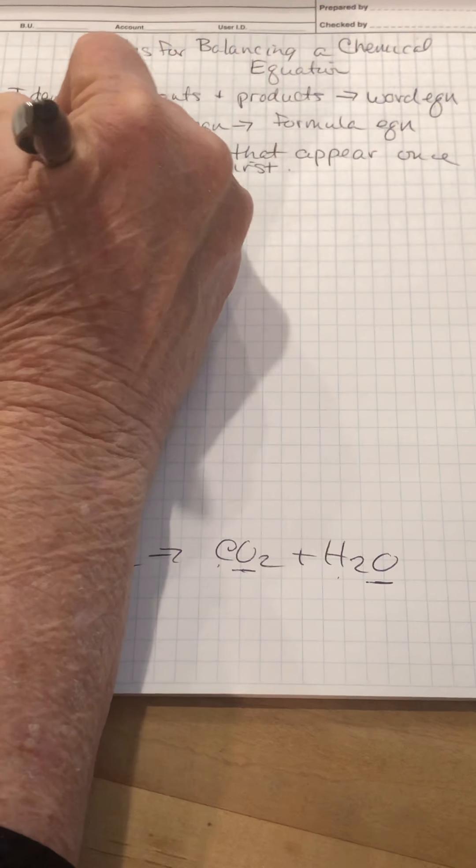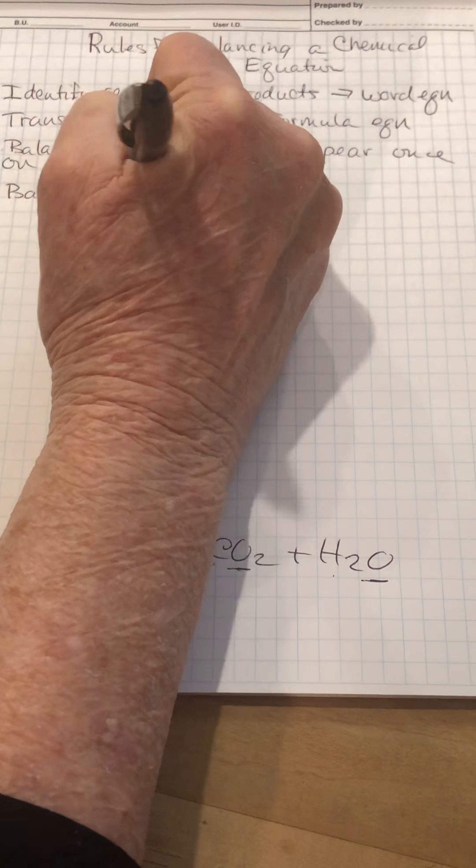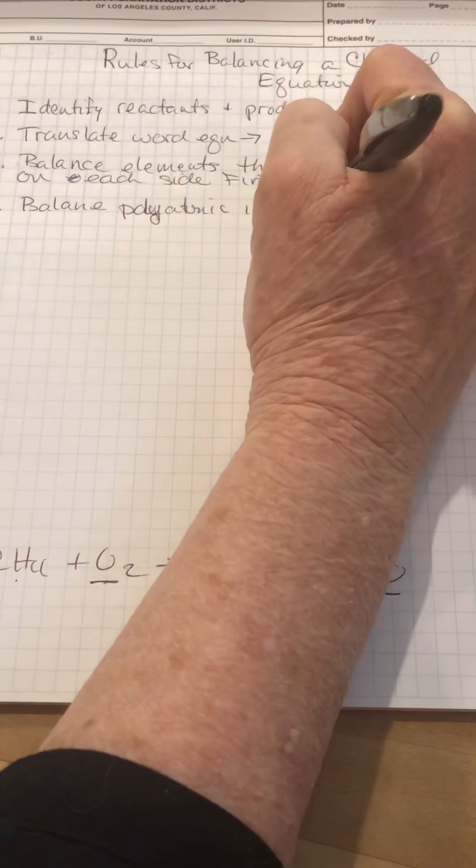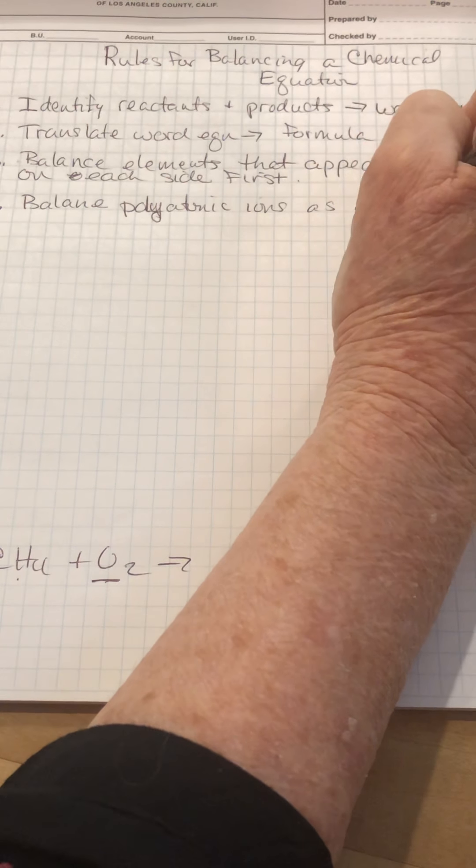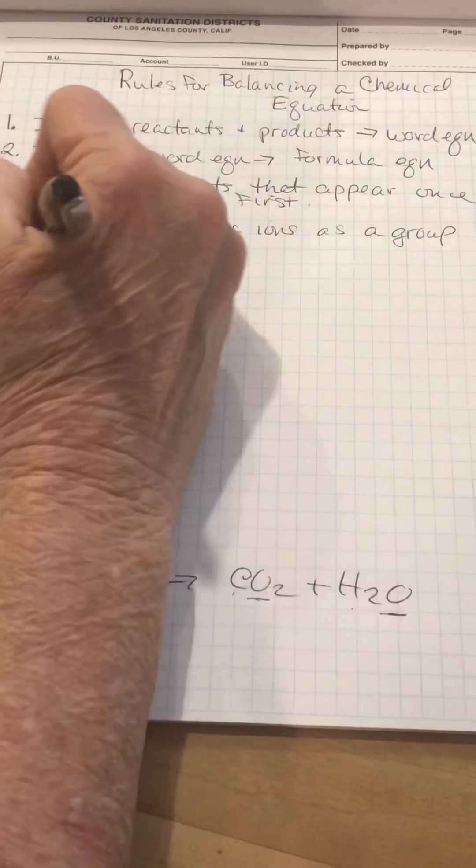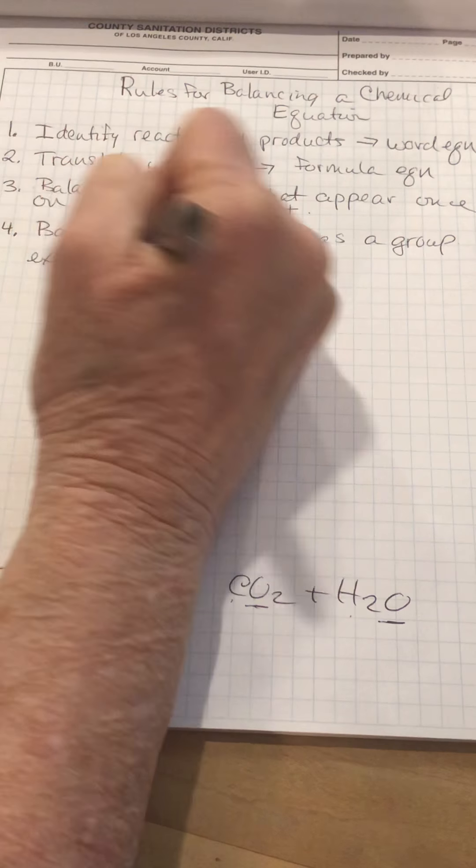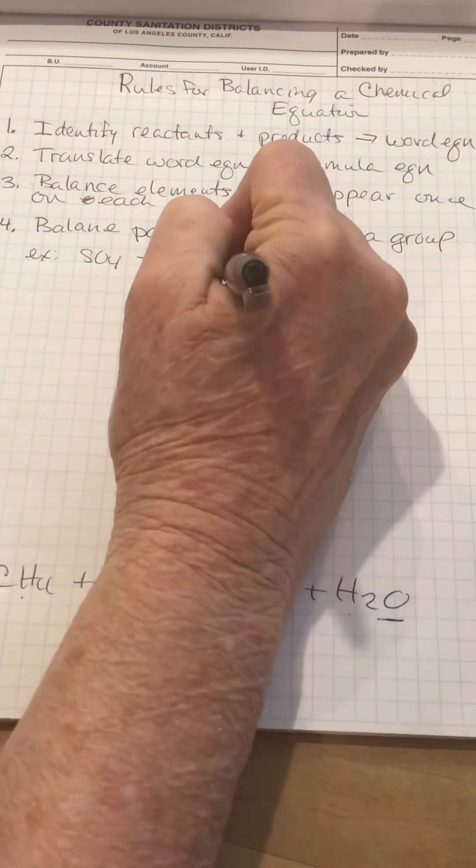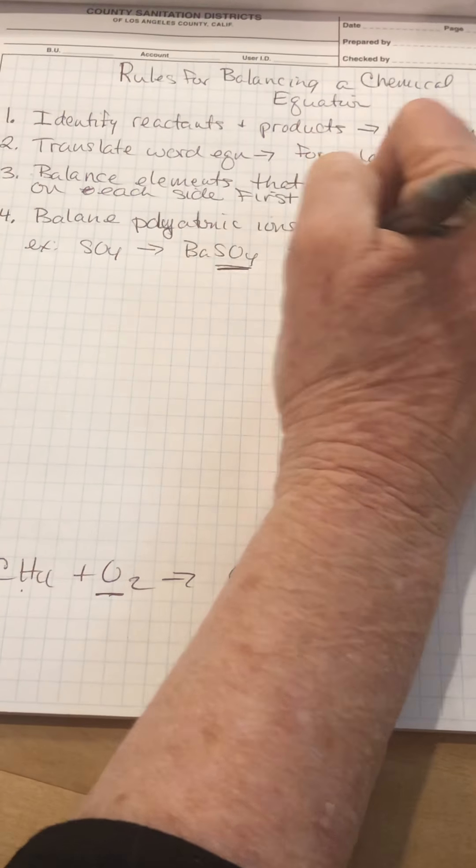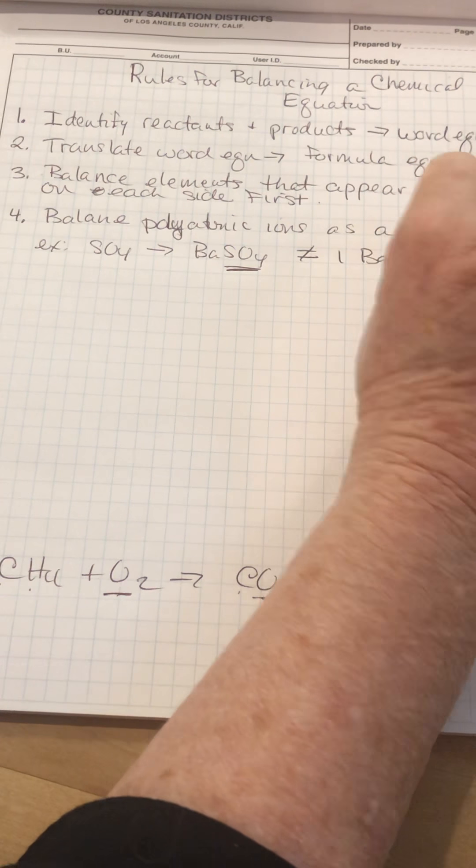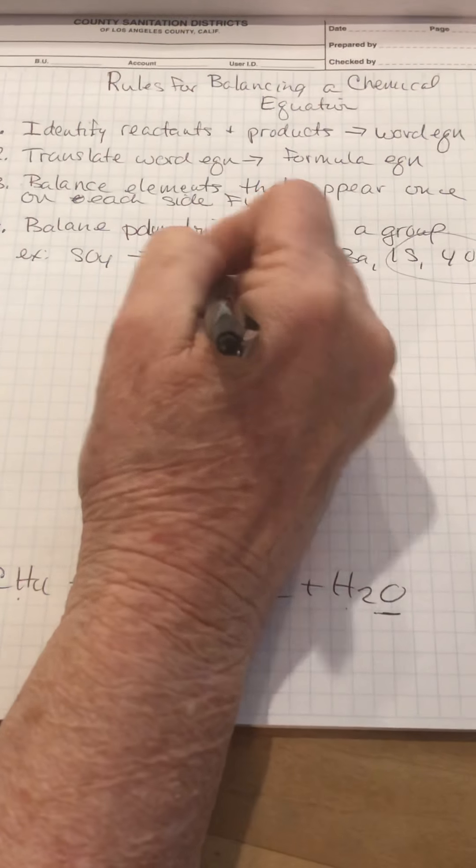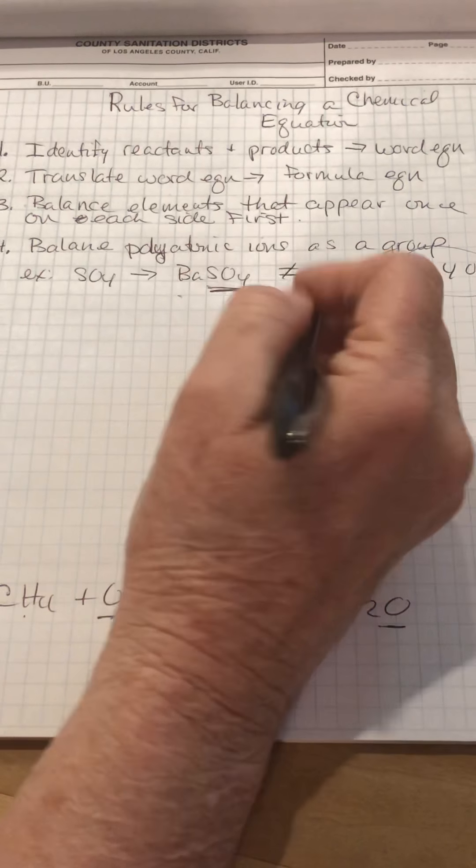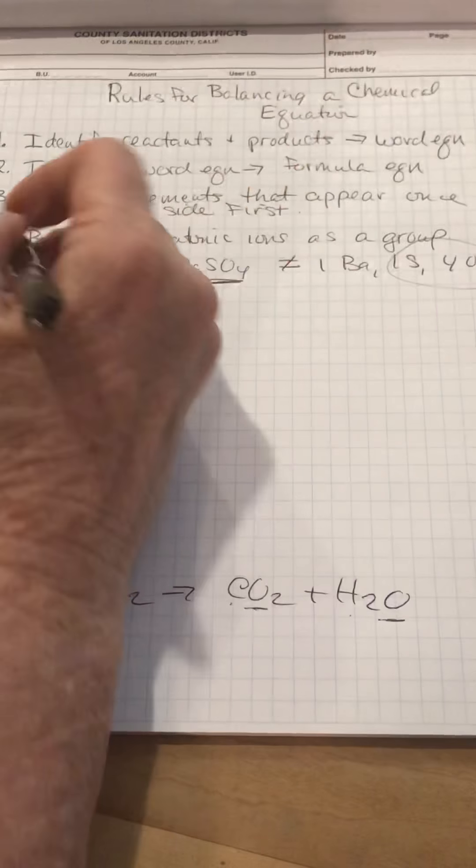Next, you're going to balance polyatomic ions as a group. If you see SO4, like in BaSO4, don't break this up. This is not one barium, one sulfur, four oxygens. You're going to treat this as a single group. This makes it a lot easier. So if you see SO4 in the reactants and the products, just count it as X. You've got one of them, you've got two of them, balance them like that.